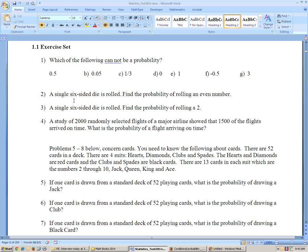On 2, a single six-sided die is rolled. Find the probability of rolling an even number. Well, there's three even numbers, 2, 4, 6, out of the six-sided die. So that would be 3 out of 6 or 1 half.